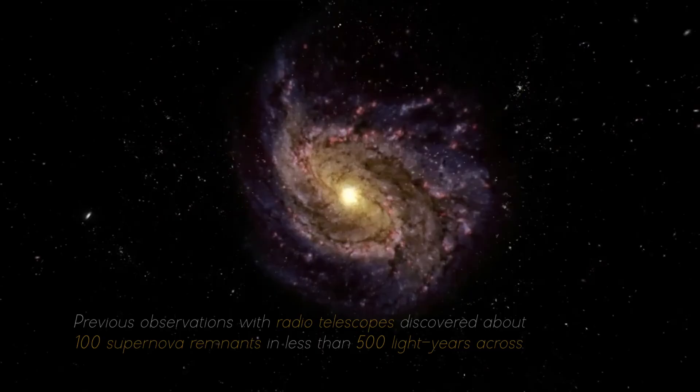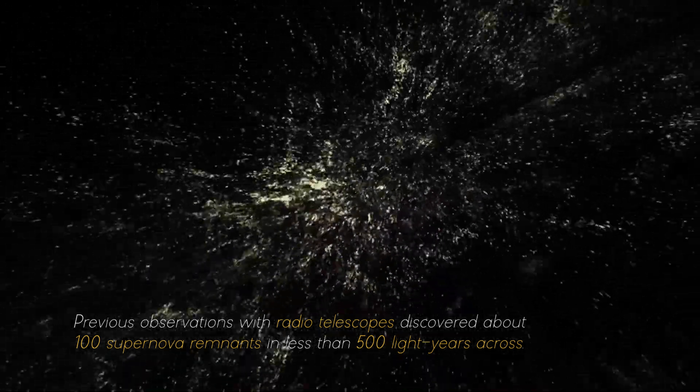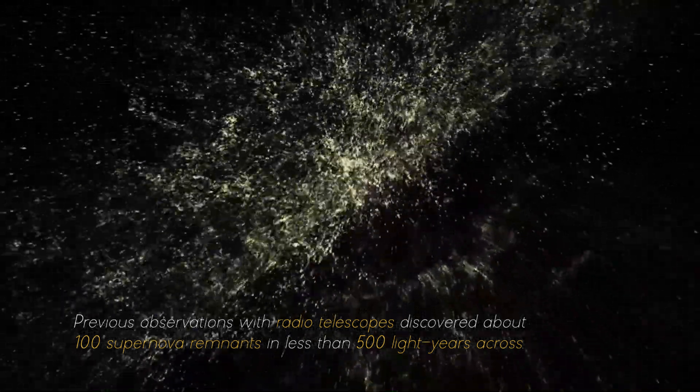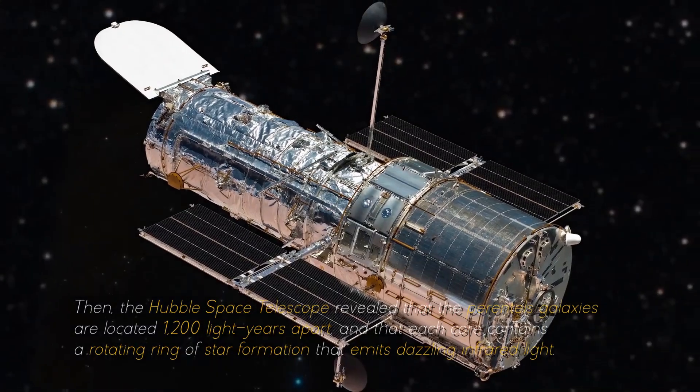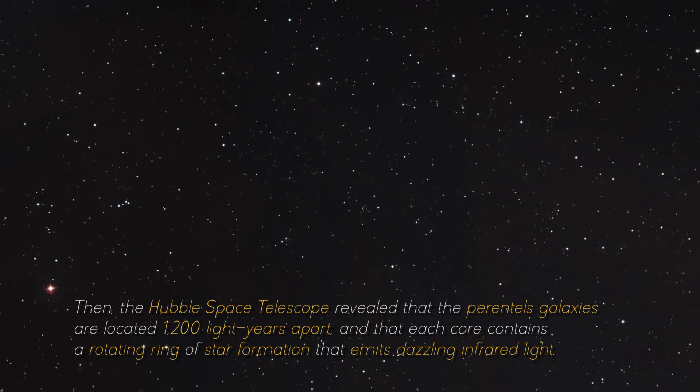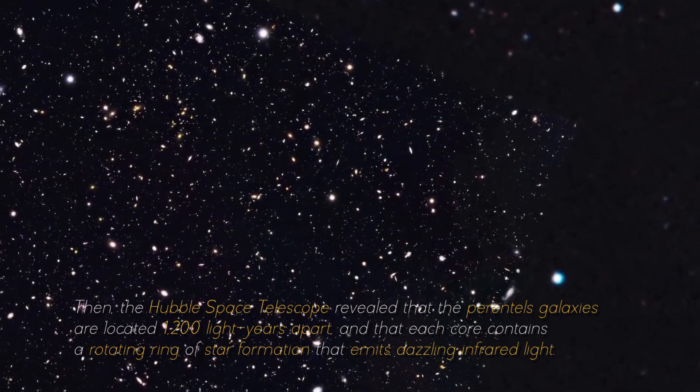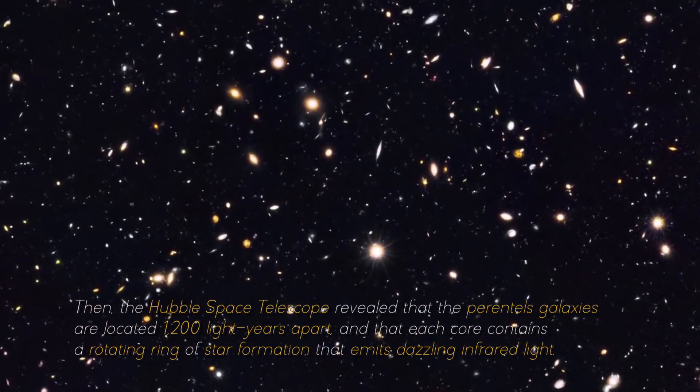This created a dense region about 5,000 light years across that contains about 200 large star clusters. Surprisingly, this small area contains as much gas as the entire Milky Way. Previous observations with radio telescopes discovered about 100 supernova remnants in less than 500 light years across. Then, the Hubble Space Telescope revealed that the parental galaxies are located 1,200 light years apart, and that each core contains a rotating ring of star formation that emits dazzling infrared light.